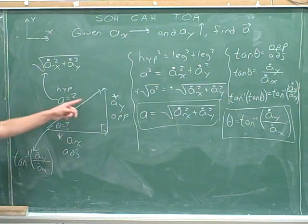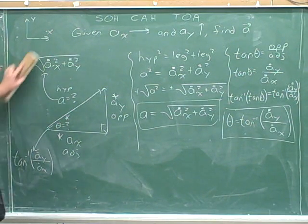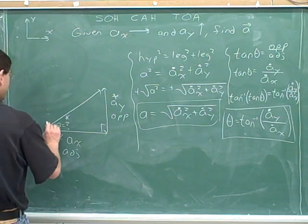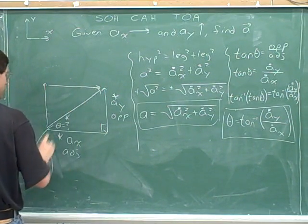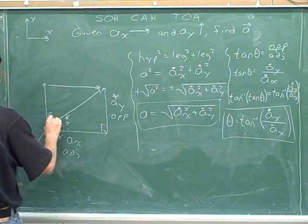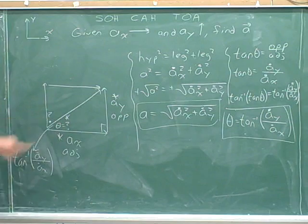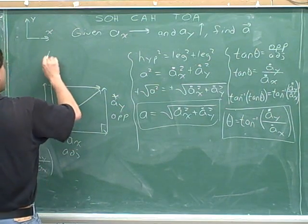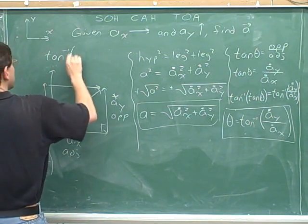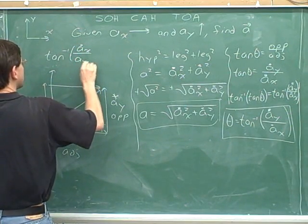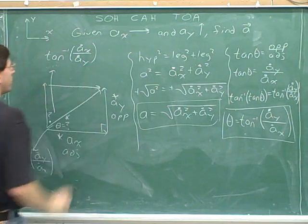What would have happened if I had drawn the y component first and then the x component? If I had drawn the y component first and then the x component, we would have ended up figuring out this angle.